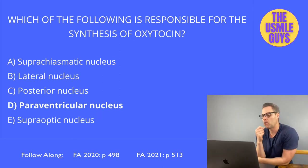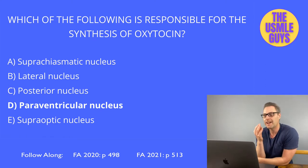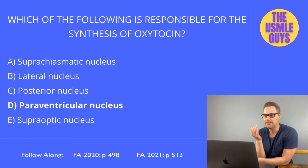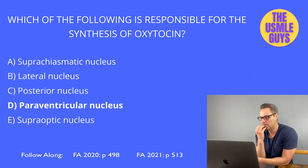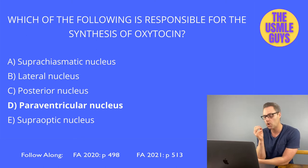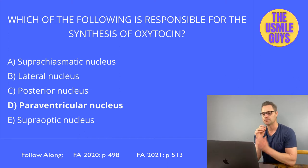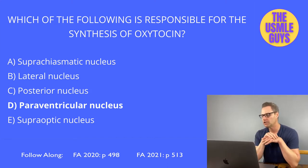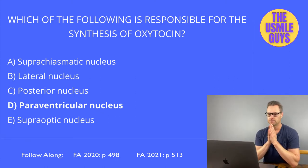Let's look at the different components of the hypothalamus. The lateral nucleus regulates hunger — if it's damaged, it leads to anorexia because there's no drive to eat. This structure is regulated by ghrelin, a hormone made by enteroendocrine cells of the GI tract, which stimulates hunger.